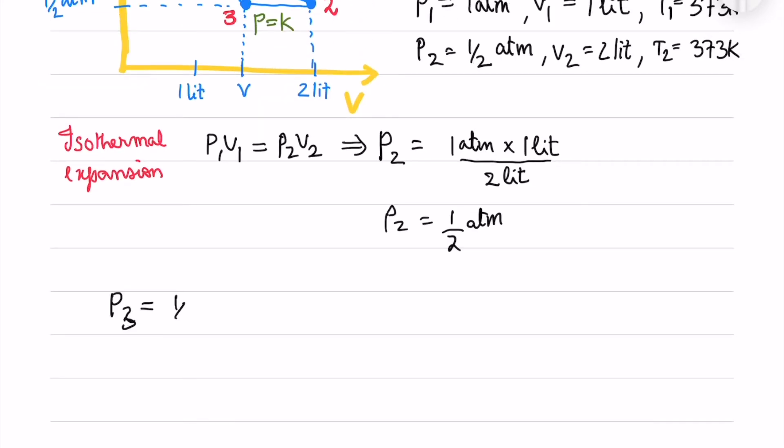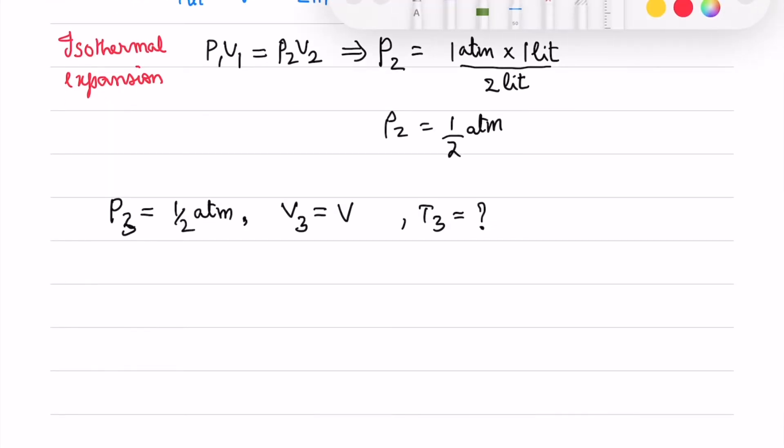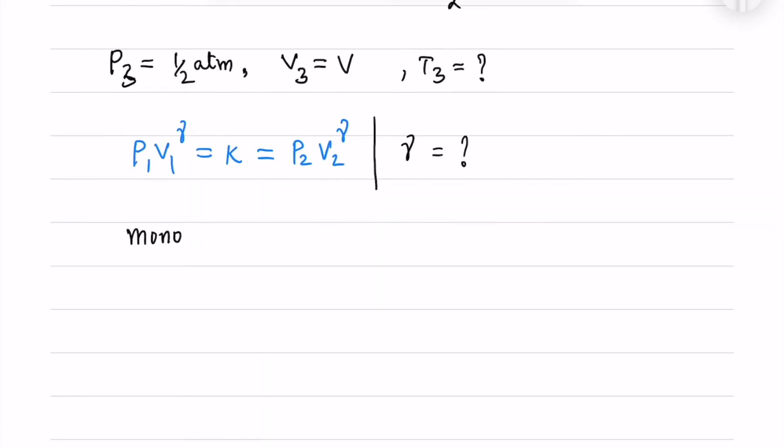Now we will find volume V. For that we will use the adiabatic compression process. We know for adiabatic expansion or compression P1 V1 power gamma is constant.